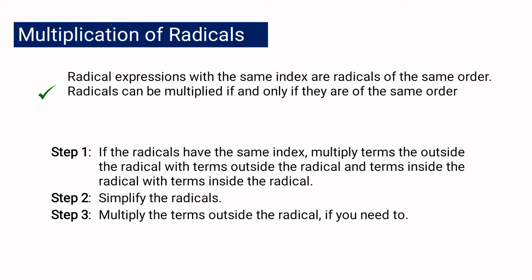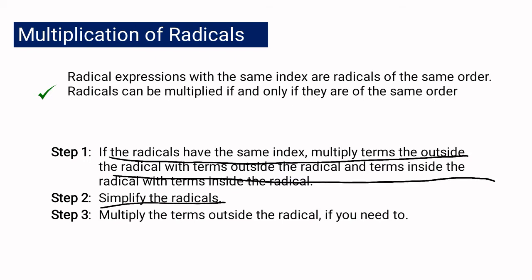You also need to remember the following. Number one, if the radicals have the same index, multiply terms outside the radical with the terms outside the radical, and terms inside the radical with the terms inside the radical. That means you multiply coefficient to coefficient and radical to radical. Then simplify the radicals, and multiply the terms outside the radical if needed.